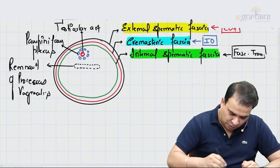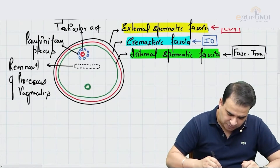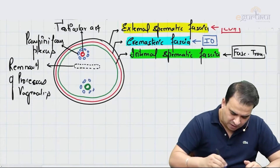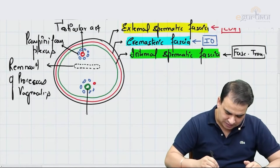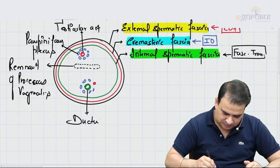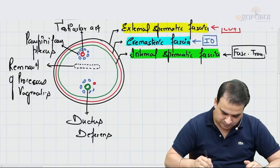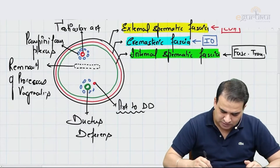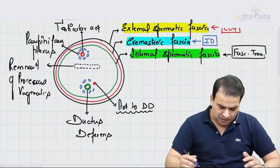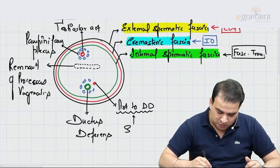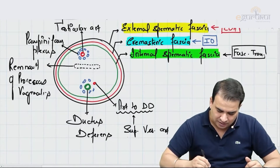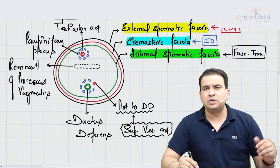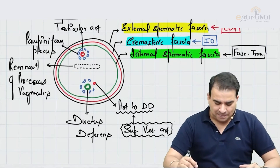We will also see the ductus deferens. If you see the lower part of the spermatic cord, there will be the ductus deferens surrounded by this venous plexus, and the artery of the ductus deferens will be seen as well — that is the ductus deferens or the vas deferens. The artery to the ductus deferens usually comes from the superior vesicular artery — it can come from the inferior vesicular also — but it usually comes from the superior vesicular artery, which supplies the bladder and is a branch of the internal iliac artery.